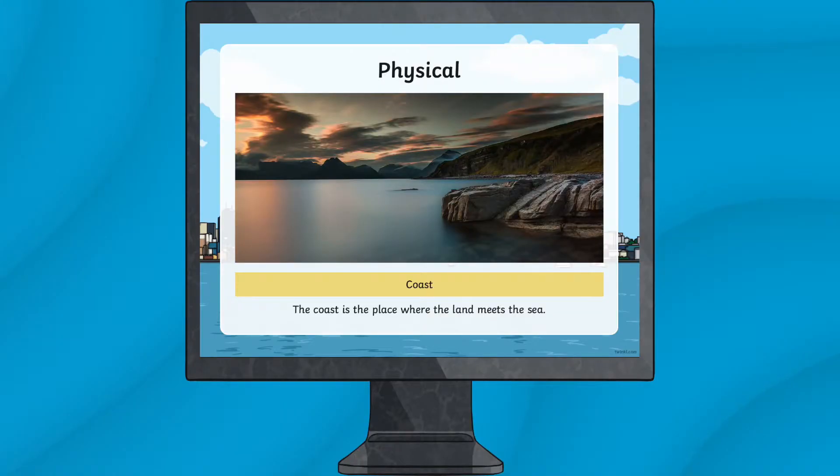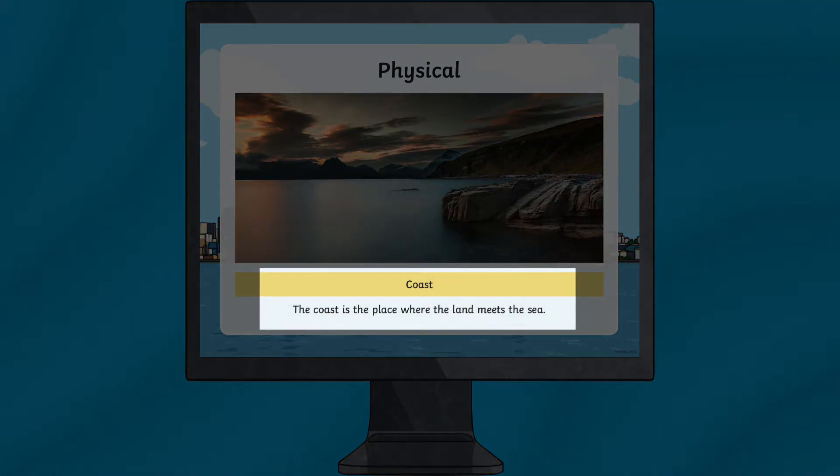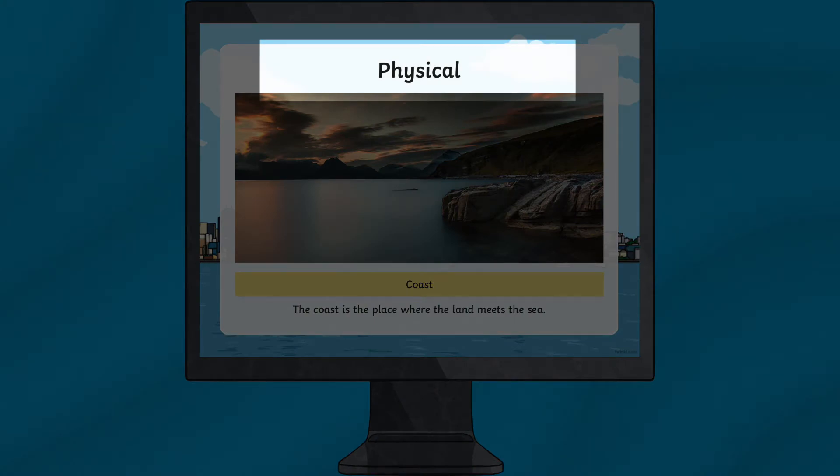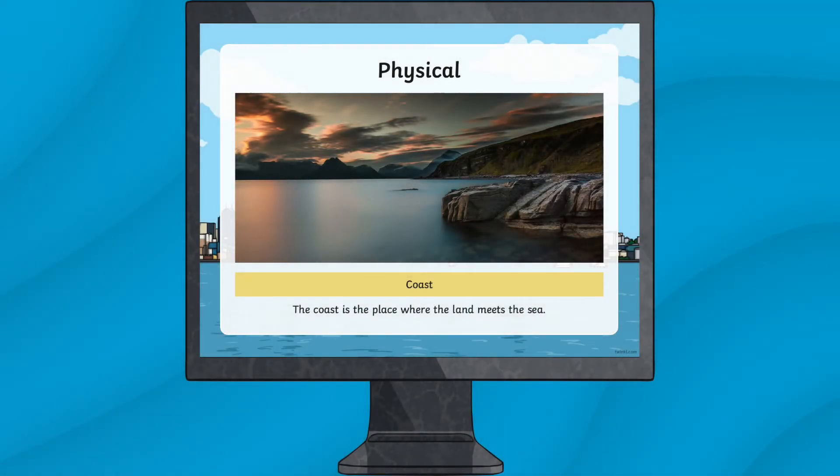Underneath each image is an explanation that describes the geographical feature, and above is a label stating whether it's physical or human. This will help children identify and recognize the difference between the two.